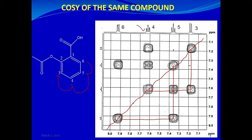For H4, it should have two correlations — one with H3 and one with H5. Going through the cross peaks, one appears at 7.35, which is H5, and the other at 7.16, which is H3. Then H6 should have only one correlation, and that is with H5 at 7.62. So you draw the square to confirm the single vicinal coupling for H6.